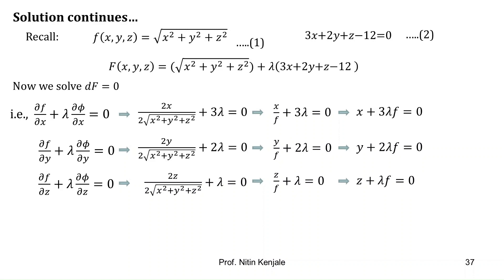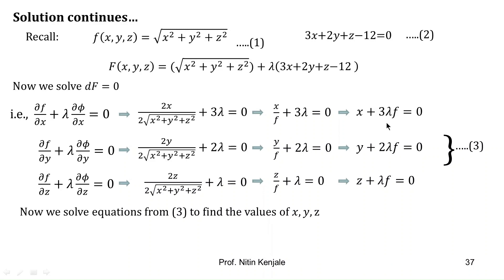You can pause the video and check these calculations. These equations are called Lagrange's equations. We now have three Lagrange's equations, labeled as equation (3). We must solve these along with the constraint equation. From equation (3): x = -3λf, y = -2λf, and z = -λf. We substitute these values of x, y, and z into the constraint equation.